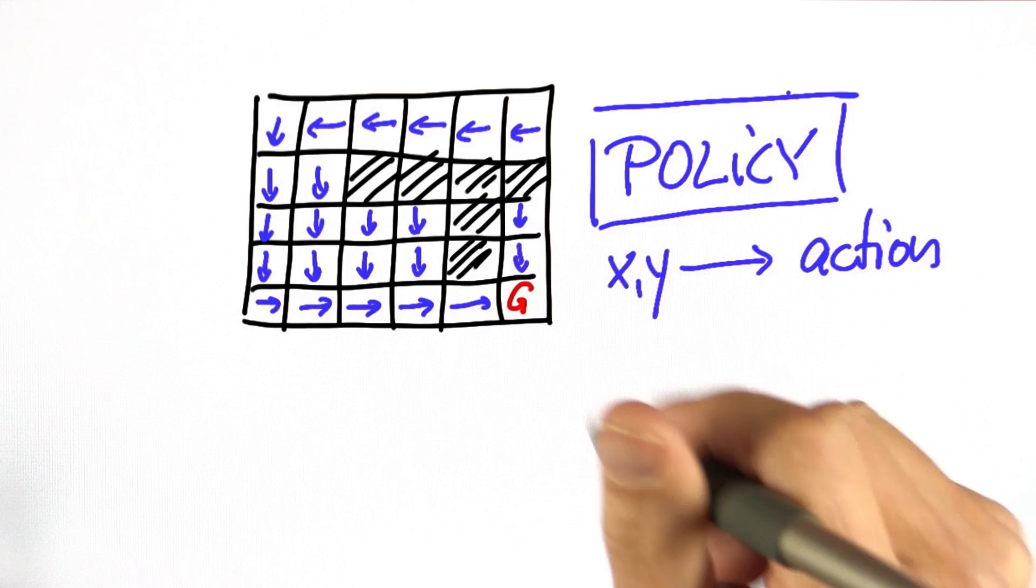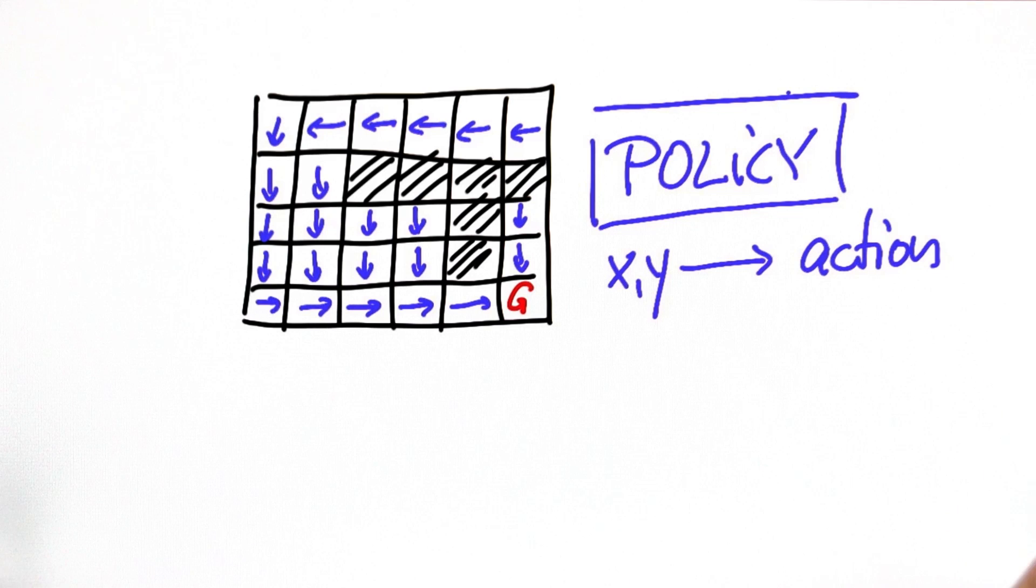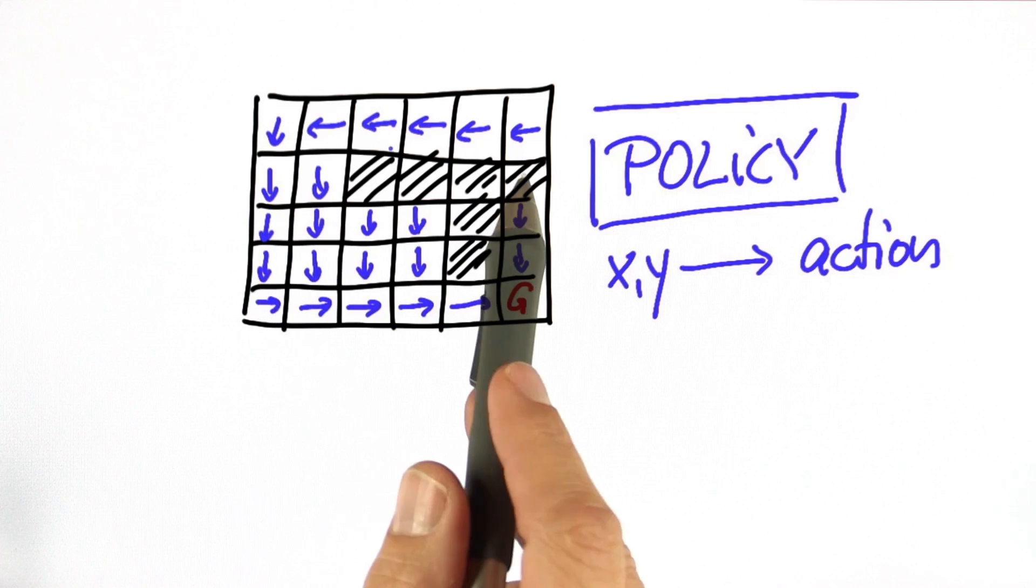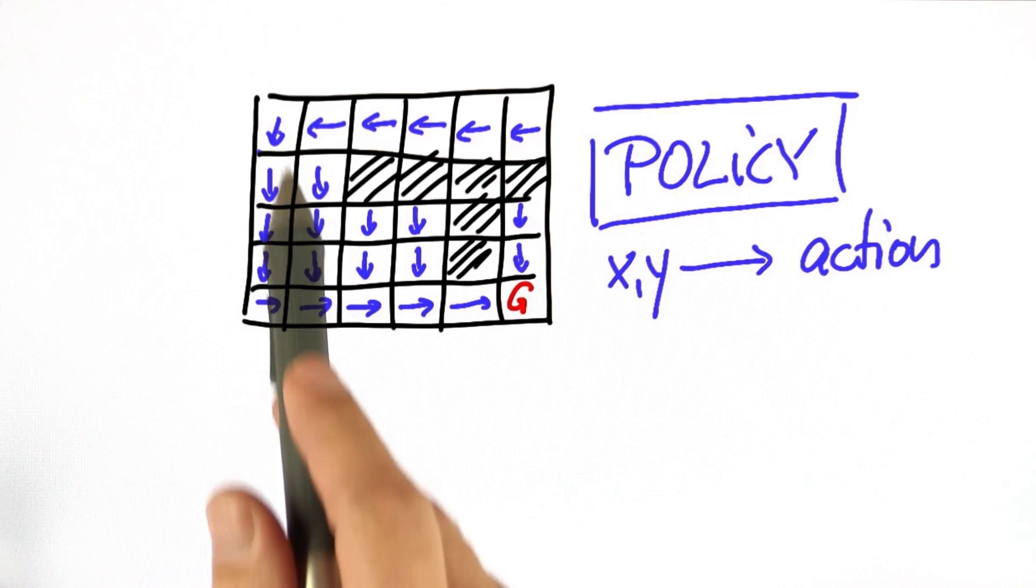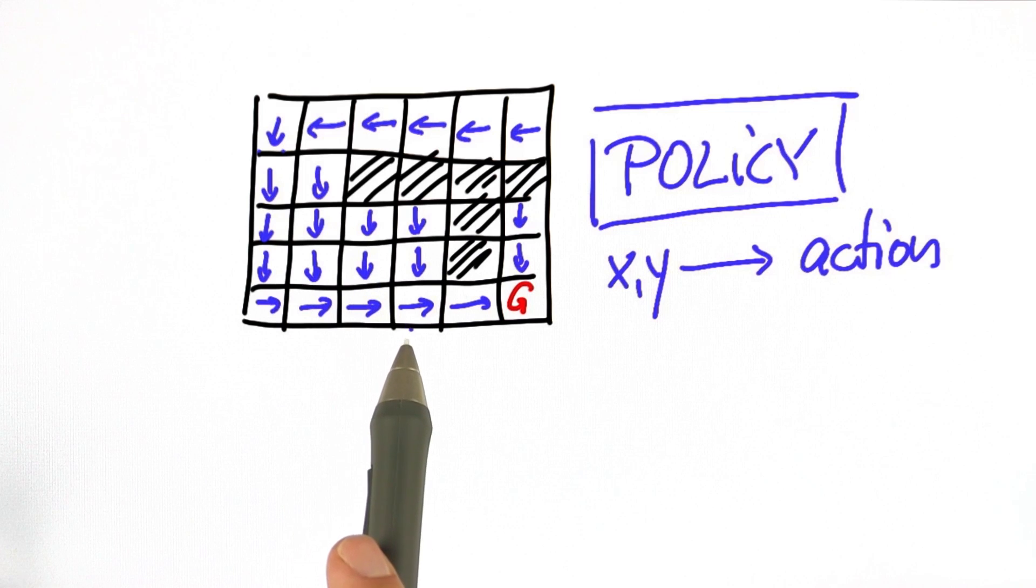Now we will compute a policy using dynamic programming. Given a grid world like this and a goal state, we will write software that will output for each of the navigable cells what the best thing is to do should the robot find itself there. That requires a different algorithm than A star.